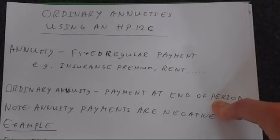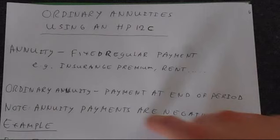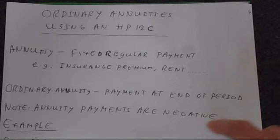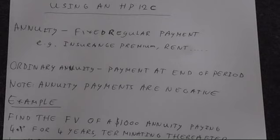It's also important to note the sign convention - we're taking annuity payments to be negative. If you don't, then you'll get very unusual answers. So let's just jump straight into an example and see how we do this in practice.